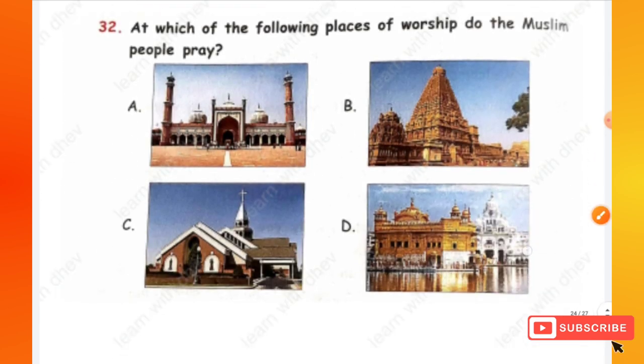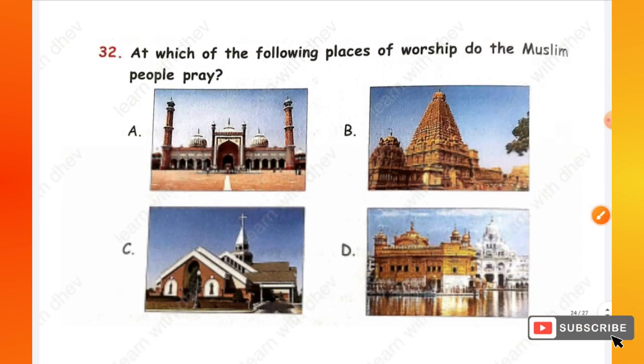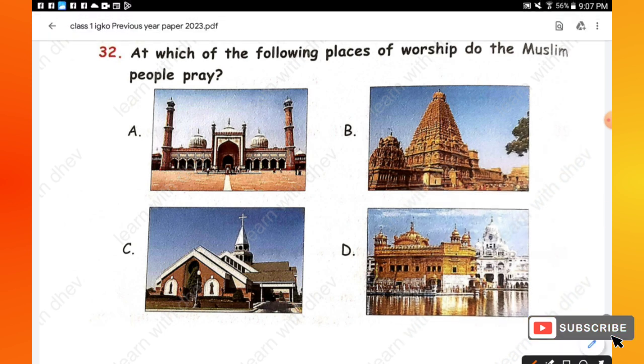Question 32: At which of the following places of worship do Muslim people pray? It's option A — Masjid.